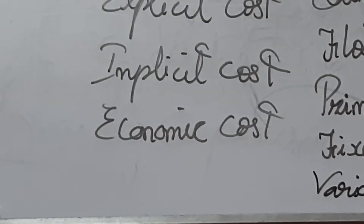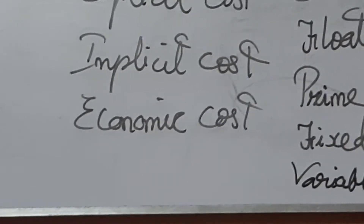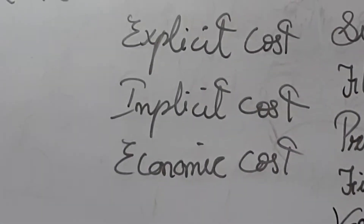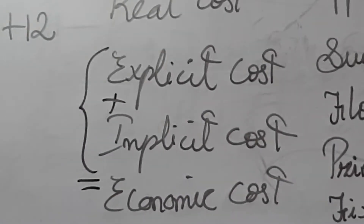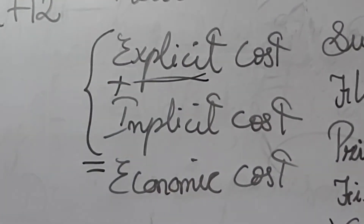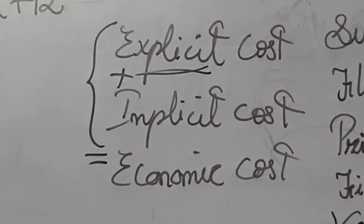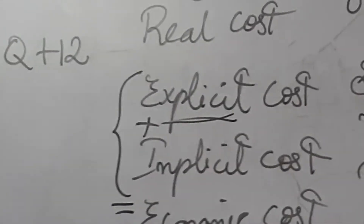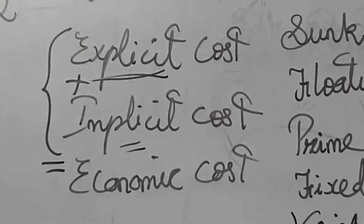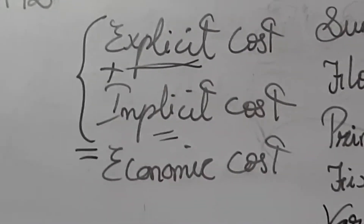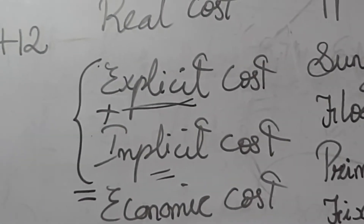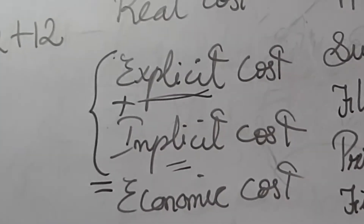Economic cost refers to all payments made to resources owned — that is, explicit cost plus implicit cost combined. When we add explicit cost and implicit cost, we get the economic cost.